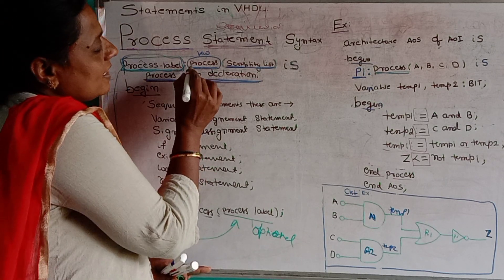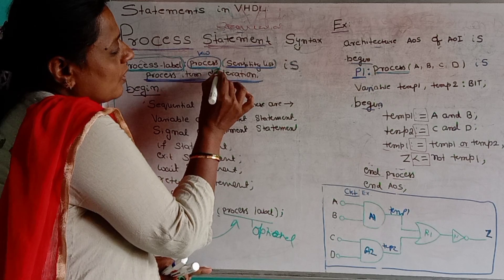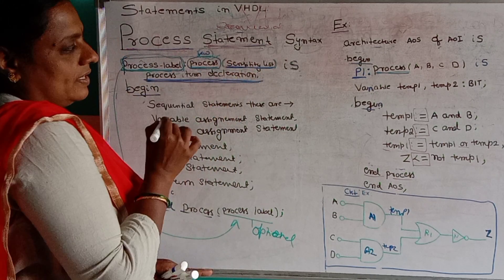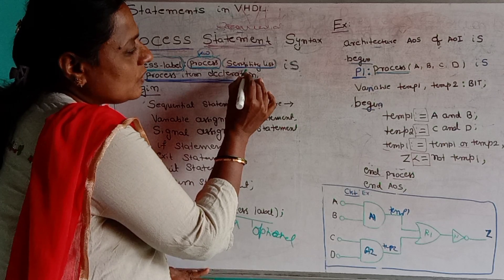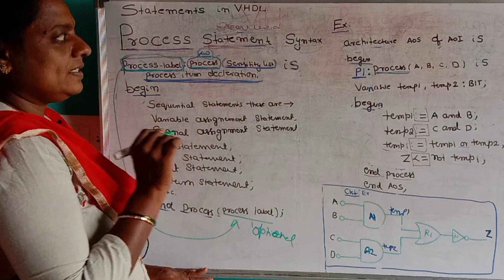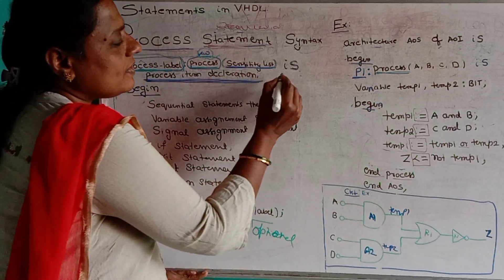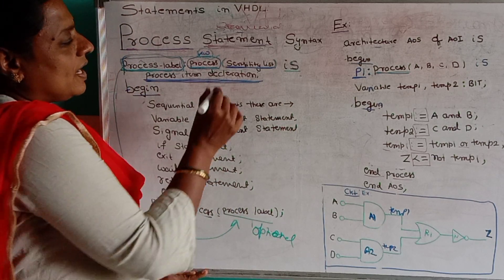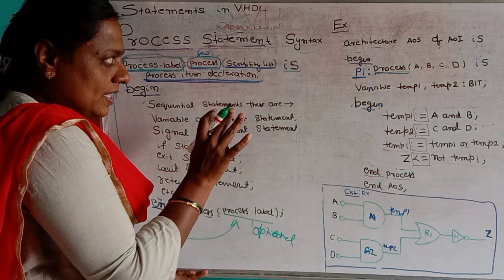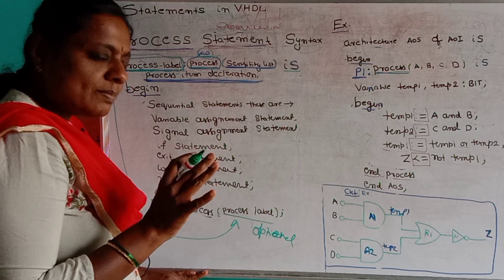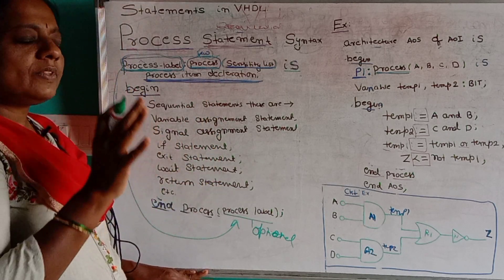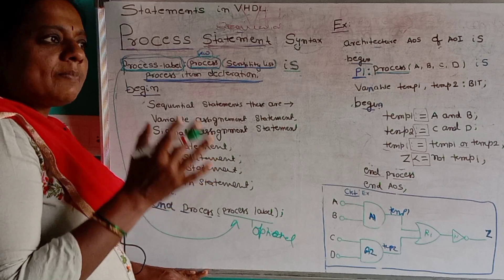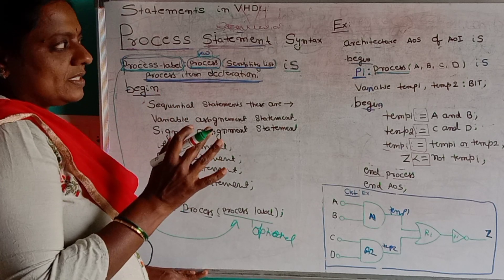Next, it starts with the process keyword — this is mandatory. Afterwards, you write the sensitivity list, and then the keyword 'is'. The sensitivity list is nothing but the list of the inputs of the program for which we are writing the process statement.